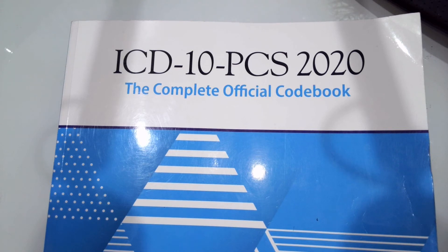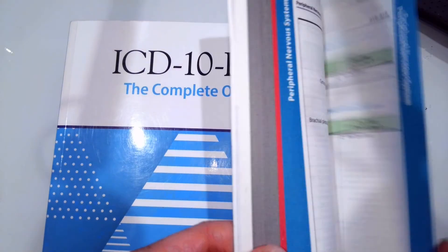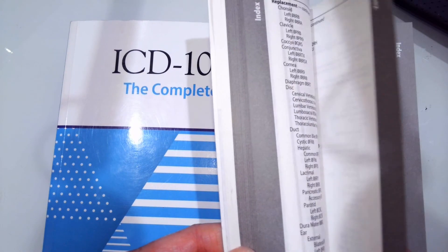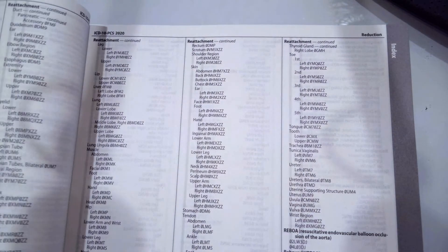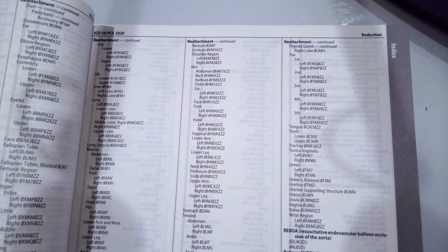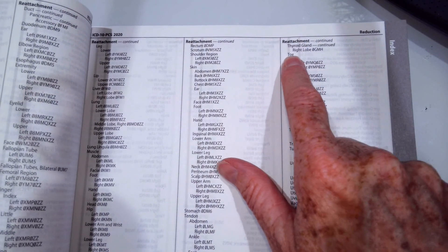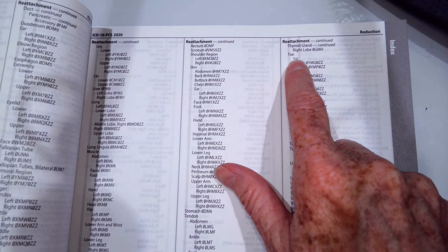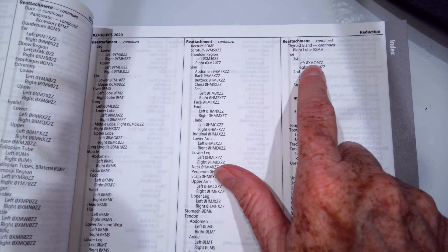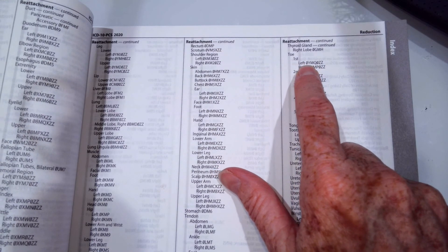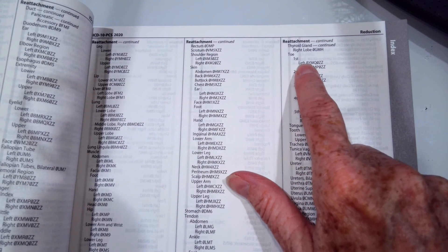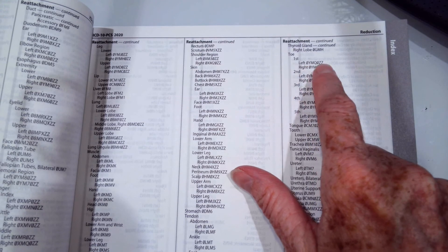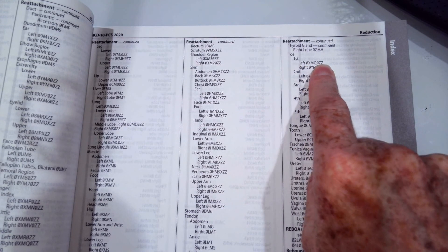Hopefully you said the root operation is reattachment. So reattachment is what we're looking up. Reattachment of what? Then you go to the body part. So we're reattaching a toe, and it was the first toe of the left foot. So we are given 0YMQ0ZZ. We do all have all seven characters here. Hopefully that's what you have.